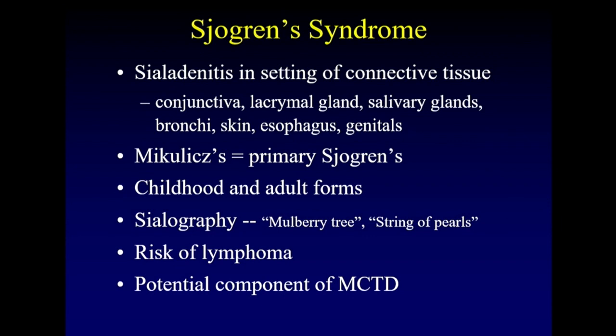Sjögren's syndrome is an autoimmune disease — the most common autoimmune disease to affect the salivary glands — but it's not just sialadenitis; it's a variety of connective tissue diseases affecting multiple organs. Mikulicz's disease, also called primary Sjögren's, is specific to the salivary glands; there are childhood and adult forms. On sialography you get a mulberry or string-of-pearls sign. Very importantly, these patients have a 14 times higher risk of lymphoma. So if you see a mass in the glands of a patient with Sjögren's syndrome, you must suggest lymphoma, particularly if it's new or enlarging.